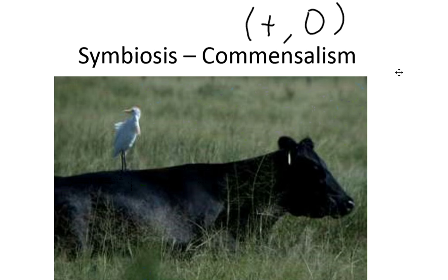What we mean by that is one organism gets a benefit — the plus — and the other organism gets nothing, the zero. It's not that it loses anything or gains anything, it just gets nothing. The example of this is the cattle egret and that cow, or it could be a water buffalo or giraffe. These cattle egrets sit on the back of this large animal, and as that animal walks through the grass and dirt, it stirs up lots of bugs. The bugs are of no consequence to an animal as heavy as the cow, but the cattle egret scoops up all the bugs and eats them. So it's a good thing to be a cattle egret — that gets a plus — and the cow just gets nothing out of this.